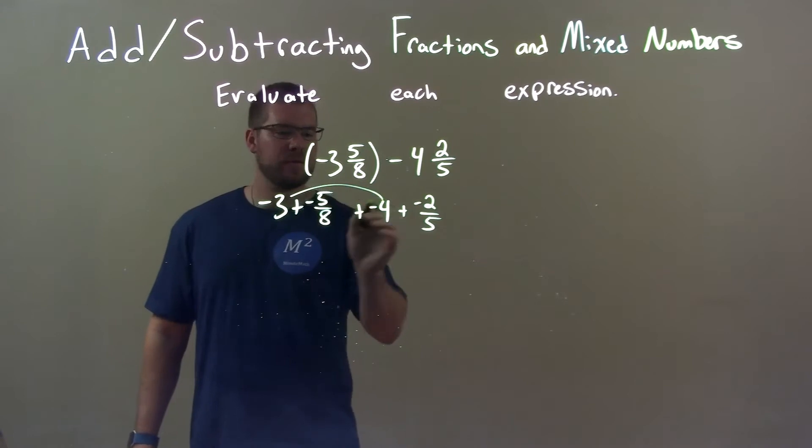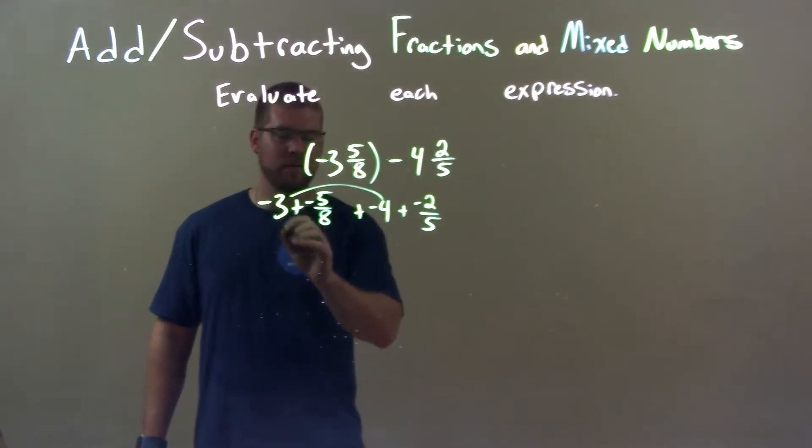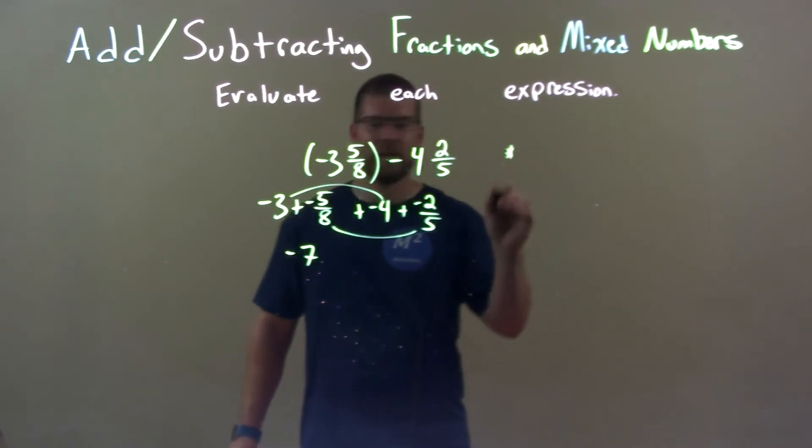So now we're going to add our whole numbers. Negative 4 and negative 3 is negative 7, but our fractions I'm going to do that work over here.